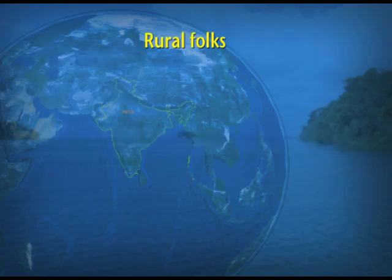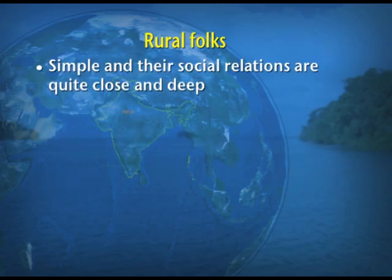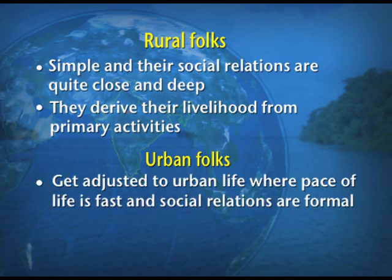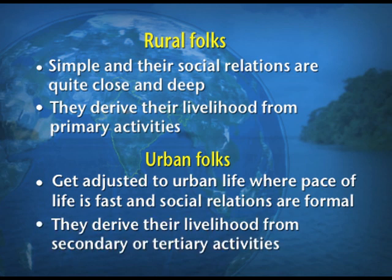The rural folks are simple and their social relations are quite close and deep. They derive their livelihood from primary activities, which only prevail in villages. Whereas urban folks are adjusted to urban life where the pace of life is fast and social relations are very formal. They derive their livelihood from secondary or tertiary activities, which are common in towns and cities.